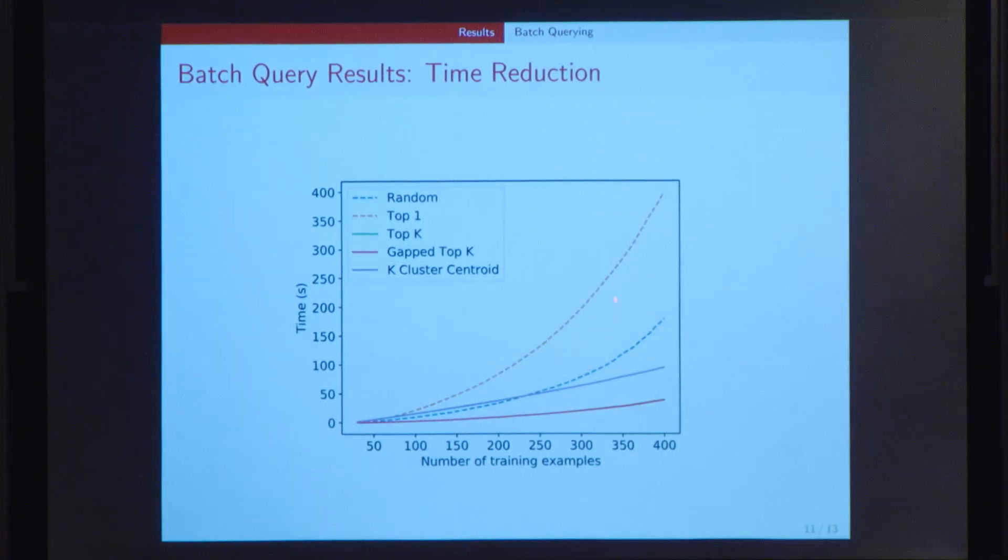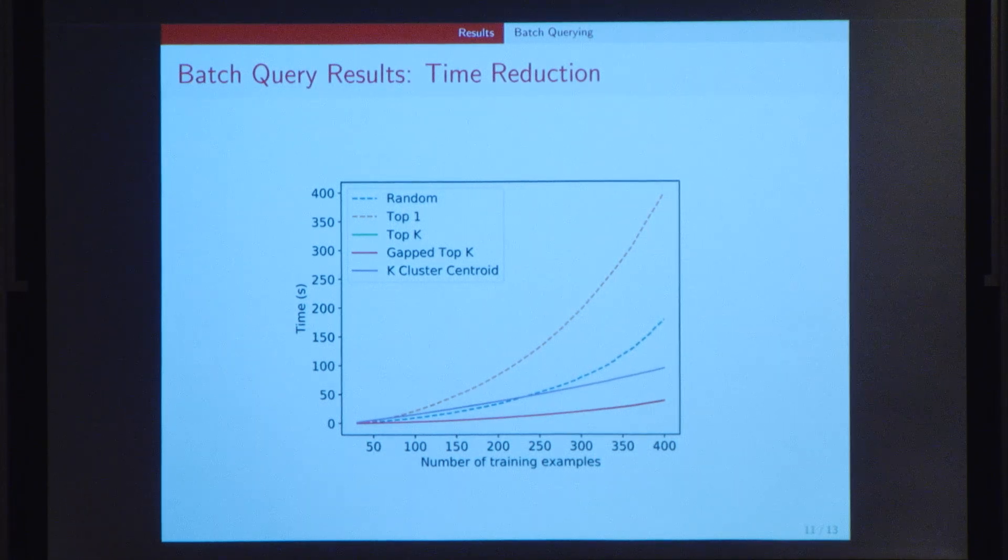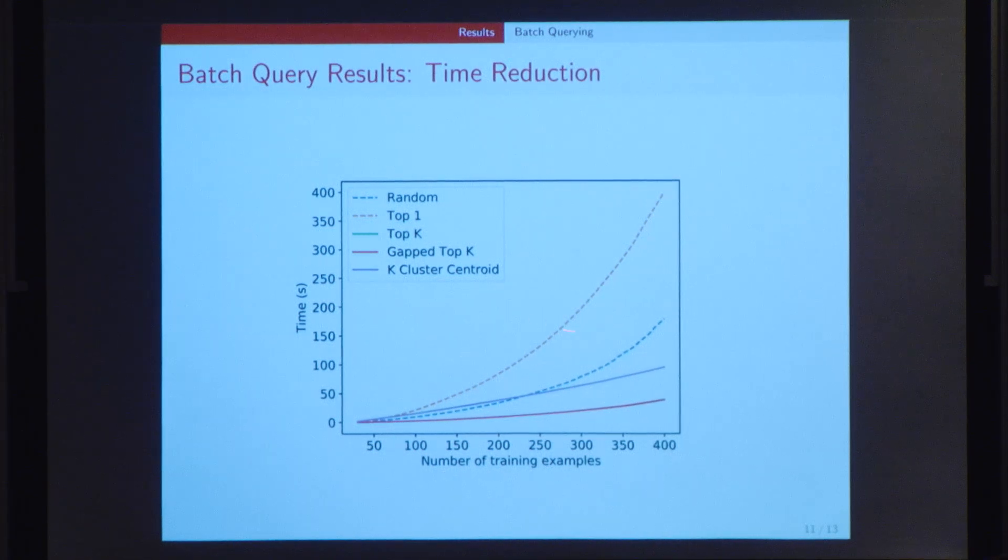Here you can see that the sequential method of uncertainty takes a very long time as compared to all three batch querying algorithms. I'm not sure if it's very clear here, but this line overlaps both the gap top-K as well as the top-K algorithms. It's almost exactly the same. Now the top-K algorithm, although it performs really fast, is not very useful because it doesn't minimize loss very quickly. On the other hand, what's really interesting here is that the gap top-K algorithm results in a decrease in time of almost 90 percent compared to the sequential algorithm.